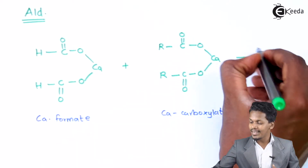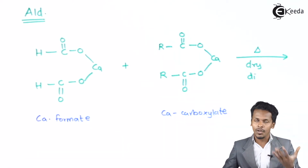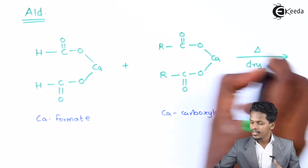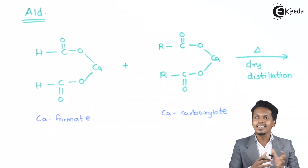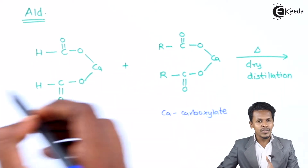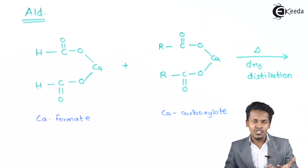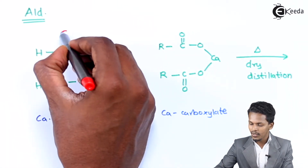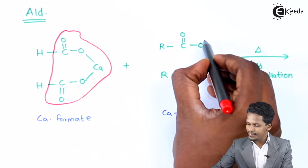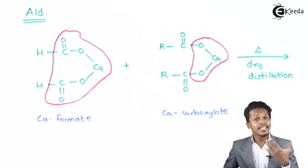Whenever it undergoes a dry distillation process — this kind of reaction is also called a decarboxylation reaction — we are doing the pyrolysis process. In a tremendous amount of heat, the carbon dioxide will be removed from this molecule as well as from the other molecule. This whole COO group would be removed from each reactant. That is the reason we could form the byproduct as two moles of CaCO₃, which will be eliminated.